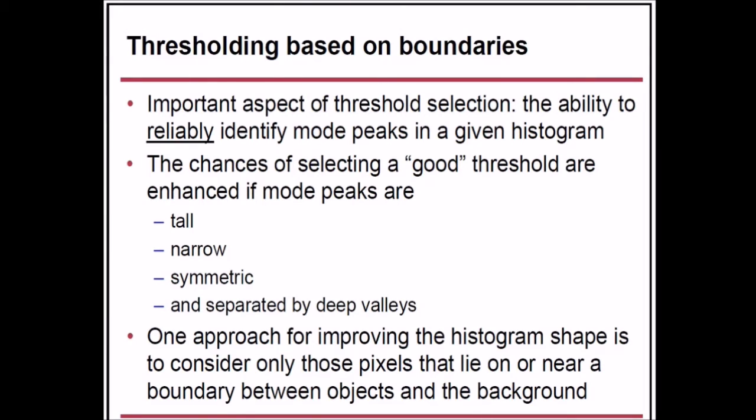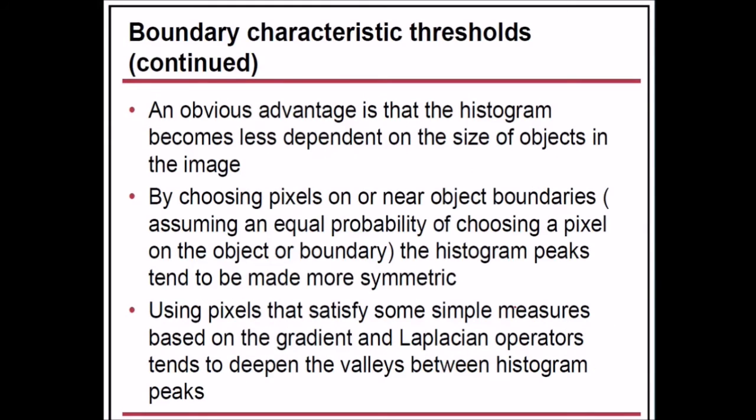Now, the important aspect is threshold based on boundaries. The important aspect of threshold selection is the ability to reliably identify more peaks in a given histogram. The chances of selecting a good threshold are enhanced if mode peaks are tall, narrow, symmetric, and separated by deep valleys. Our approach to improving the histogram shape is to consider only those pixels that lie on or near a boundary between objects and the background. An obvious advantage is that the histogram becomes less dependent on the size of the objects in the image.